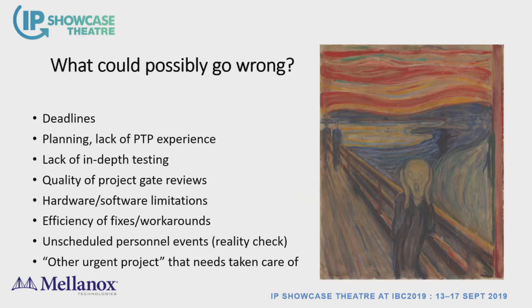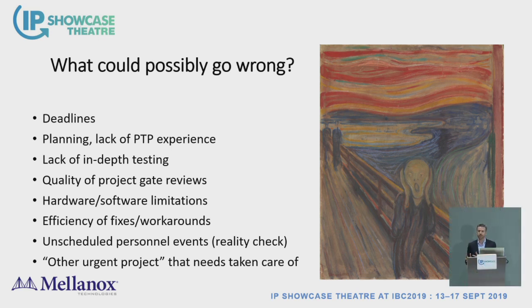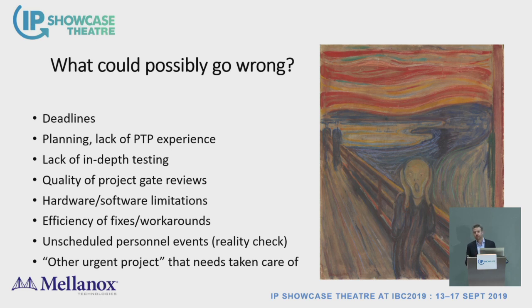What could possibly go wrong in designing this? Number one, like any project, you've got deadlines. Deadlines mean constraints, which means you operate within a finite time of what the industry can provide. You will build with what is available, not necessarily what you wish for. Number two, PTP is a new technology, so planning may be different from the way you used to do it, and you need to adapt processes.